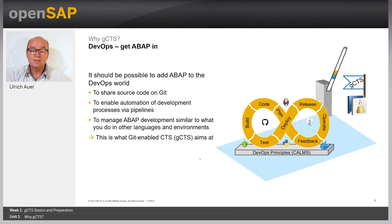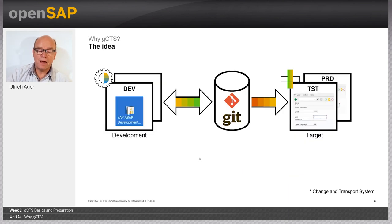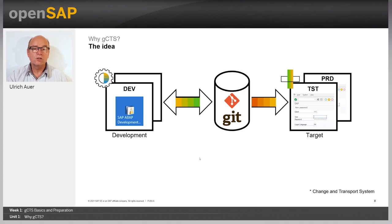The Git-Enabled CTS combines the good features from both worlds. Automatic change recording stays as it is, but when changes are released, they are no longer stored in import queues — instead they are committed to a Git repository. From there you can provide content to other ABAP systems, while classic transport tools are used under the hood. By storing ABAP artifacts in a Git repository, you can share source code, maintain version history, and automate development and delivery processes with pipelines.